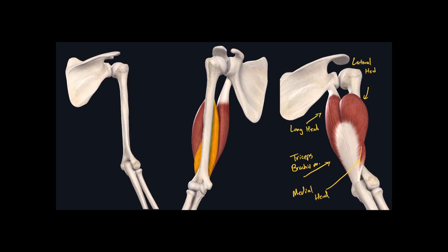You may be thinking: why is this called the medial head when it seems more lateral than the lateral head? Looking at the middle image, it's easy to see the long head and the lateral head. But the muscle shaded in yellow is actually more medial in position than the lateral head — that's why it's considered the medial head of the triceps brachii, even though its insertion point is slightly more lateral.